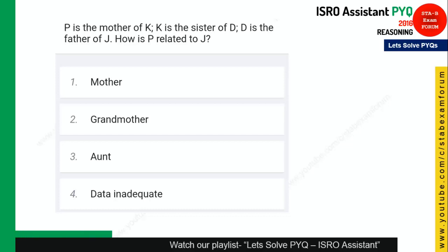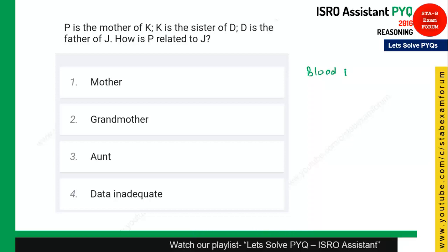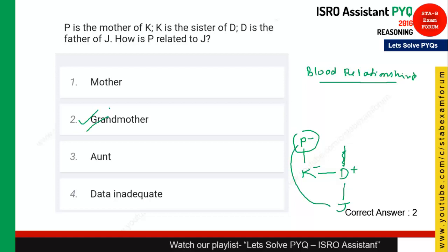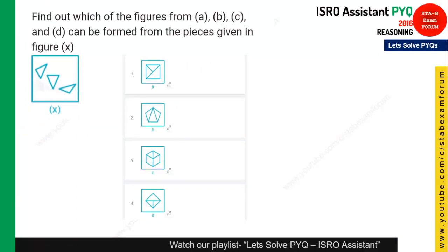The next question is from blood relationships. In all competitive exams there is at least one question on blood relationships. Draw a tree diagram: P is the mother of K, K is the sister of D, and D is the father of J. So how is P related to J? There is one generation between P and J's parent, making P the grandmother of J. Option 2 is the right answer.